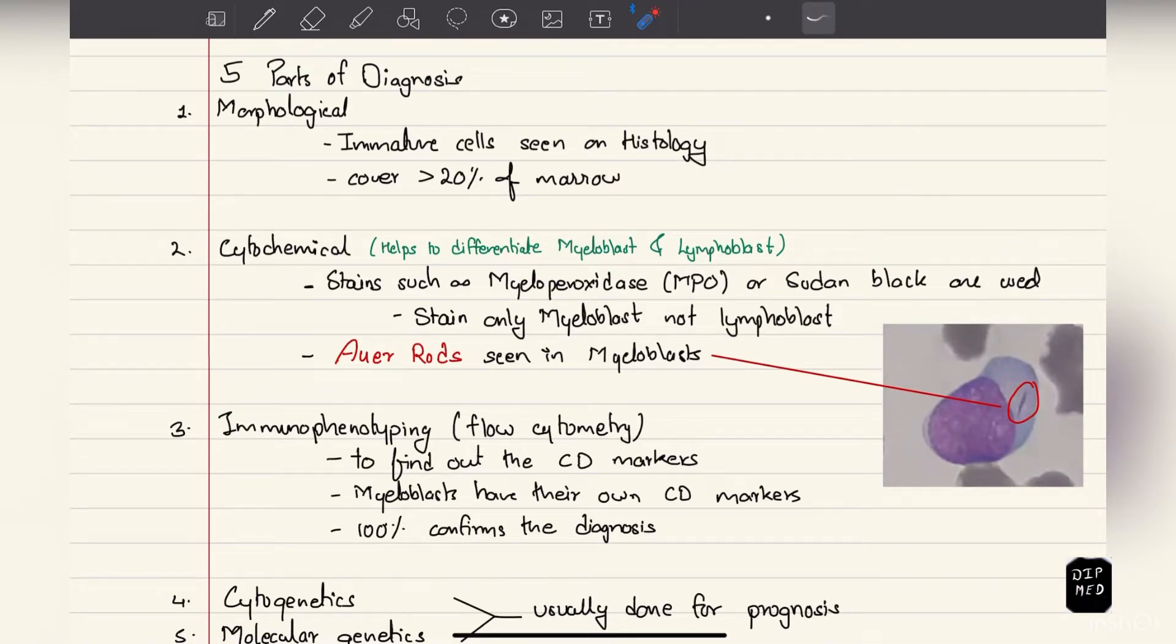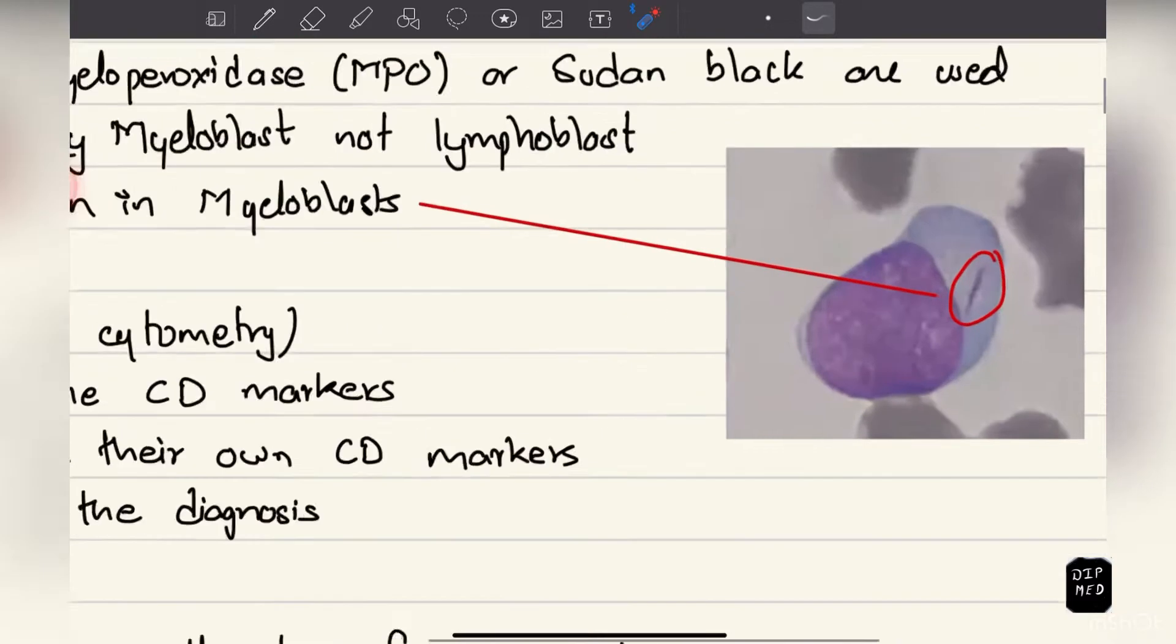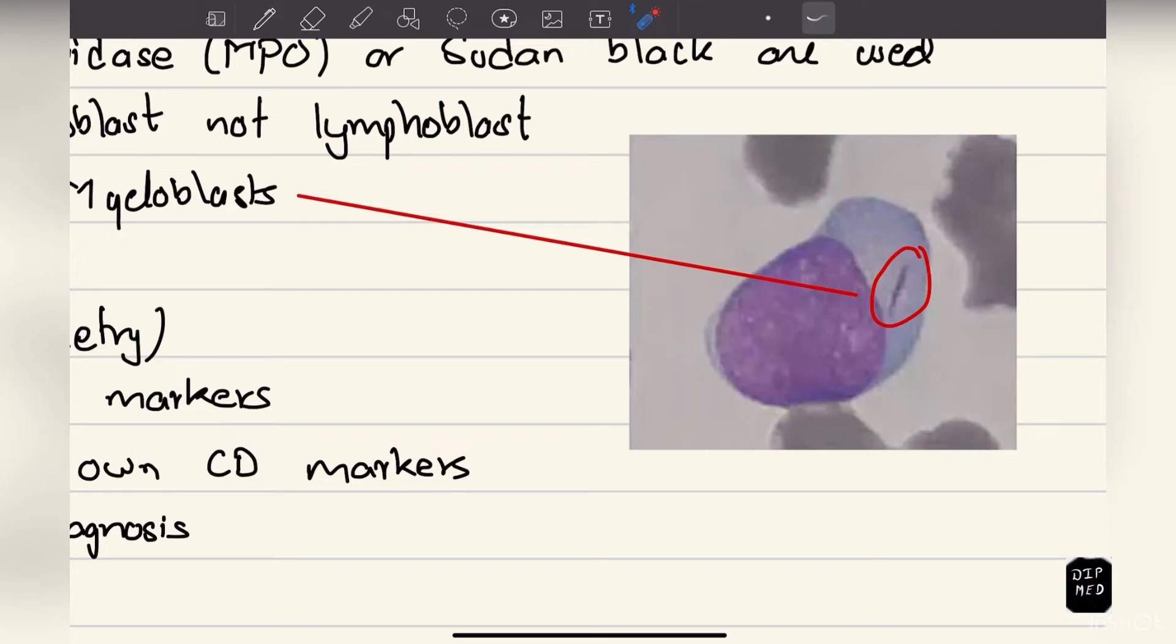Since no myeloid cells are present inside the lymph node, lymphadenopathy is less common. Since many cells are dying, hyperuricemia can occur. I'm going to briefly talk about diagnosis because this will help us better understand the disease. First is morphological: in morphology we look for immature cells on histology covering more than 20% of marrow. Morphologically we can see immature cells but cannot differentiate if it's myeloblast or lymphoblast. For that we do cytochemistry. We stain those cells with myeloperoxidase or Sudan black, and these stains are taken up only by myeloblasts and not by lymphoblasts.